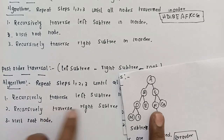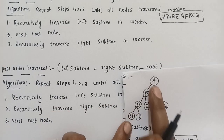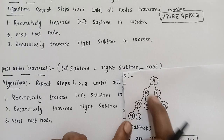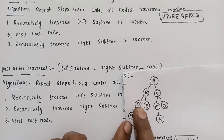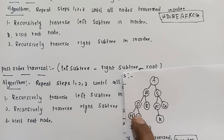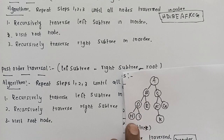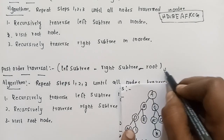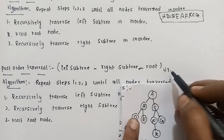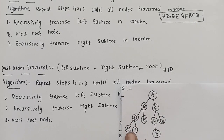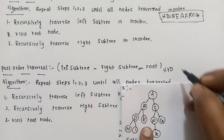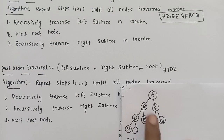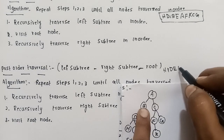For post-order traversal example: recursively traverse the left subtree. For node D's subtree — left is H, right is I, root is D — so we visit H, then I, then D. Then for B: left subtree done, then right child E, then root B.